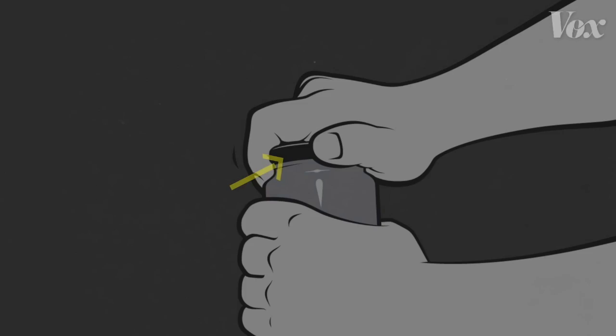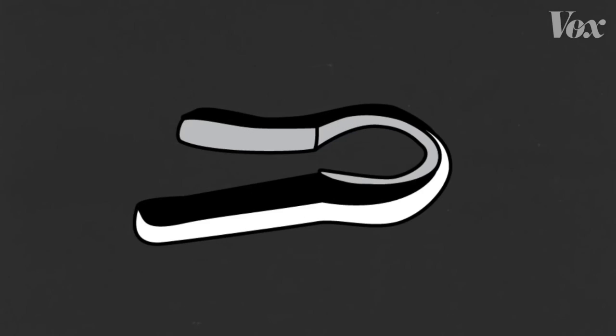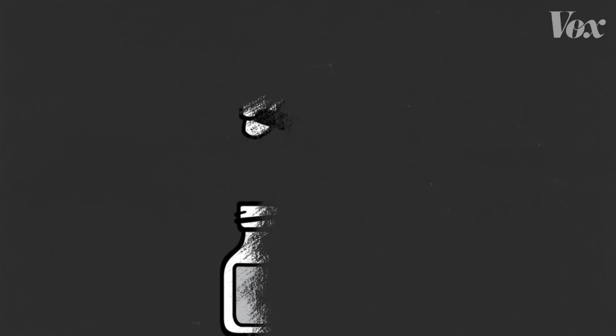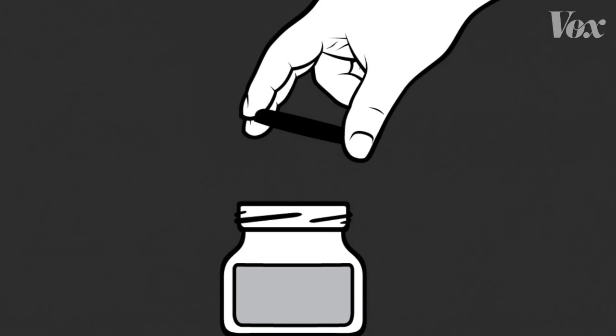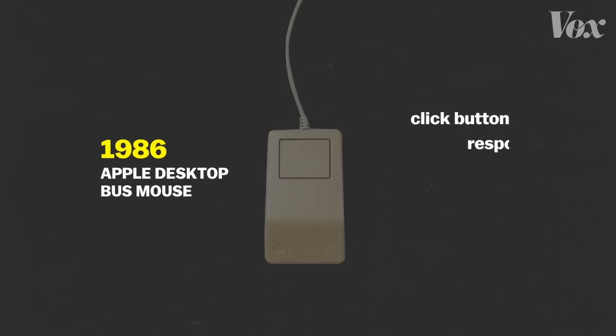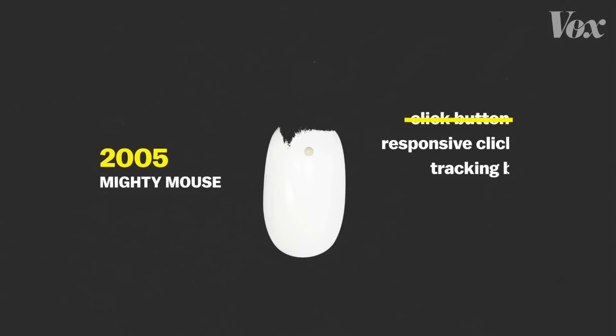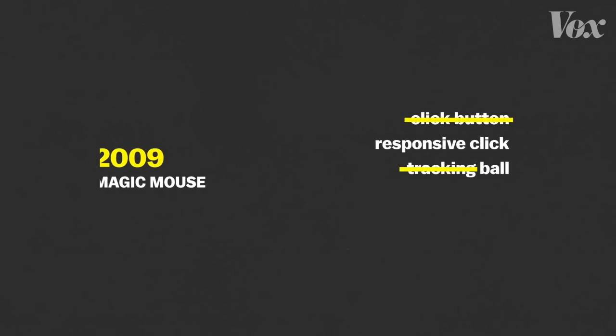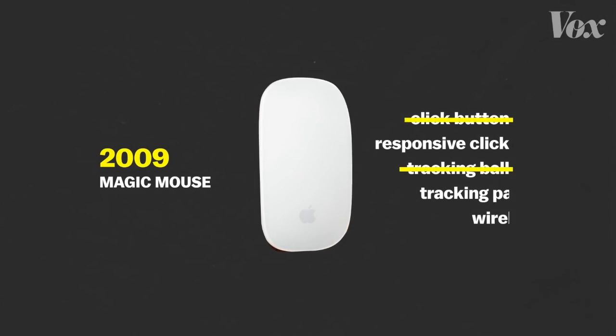Maybe I could redesign the jam jar lid, or maybe I could give them a tool to help them. So the first step is looking at the world and coming up with a good question. For making a mouse, that means watching how people use computers and observing what they want and what they don't.